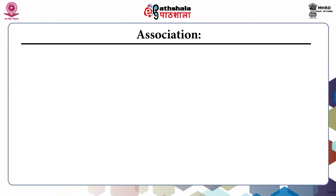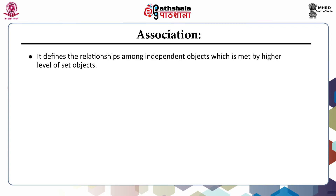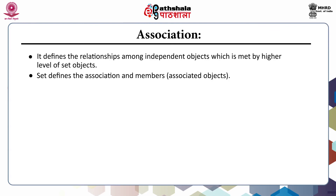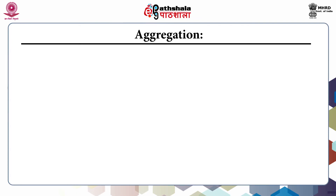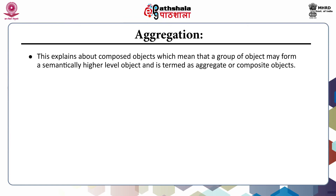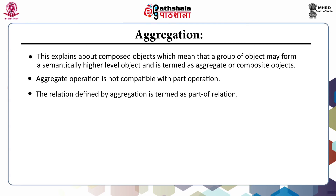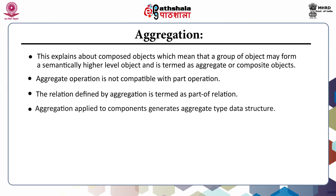The third abstraction is association. It defines the relationship among independent objects which meet by a higher level set of objects. The set defines the association and its members, that is associated objects. Therefore, this abstraction process is termed as a member-of relation. The last abstraction is aggregation. This explains composed objects, meaning that a group of objects may form a semantically higher-level object, termed as aggregate or composite objects. Aggregate operation is not compatible with part operation. The relation defined by aggregation is termed as part-of relation. Aggregation applied to components generates aggregate type data structure.